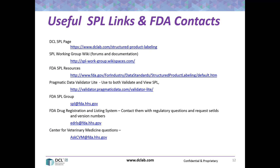The 5 to 10% of errors that it does not catch are those that involve checking the FDA's databases — validating things like 'is this establishment registered?' or 'has the data changed?' — those checks require going to the FDA's databases, which Pragmatic Data does not do. That's the 5 to 10% of errors you have to catch by submitting to the gateway.